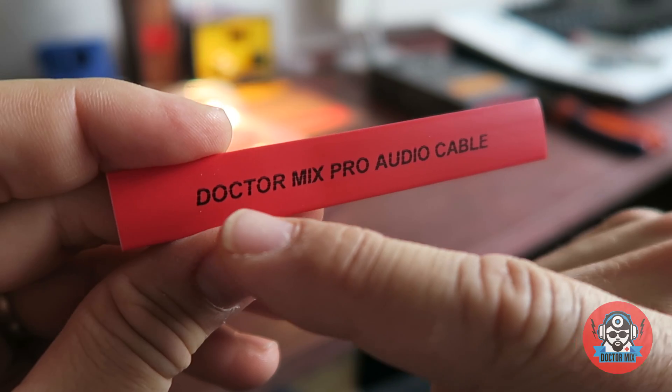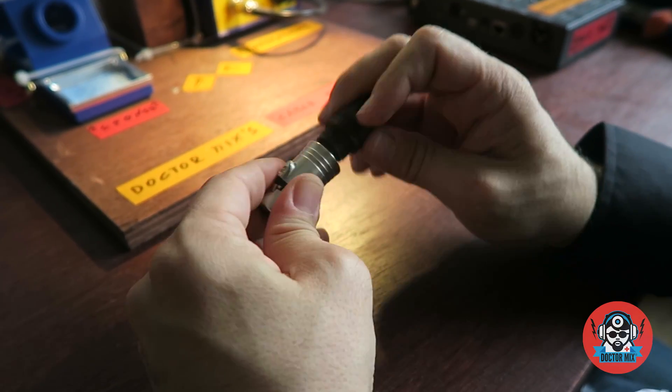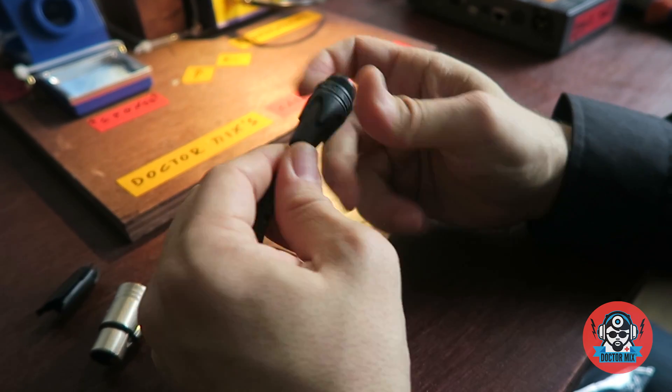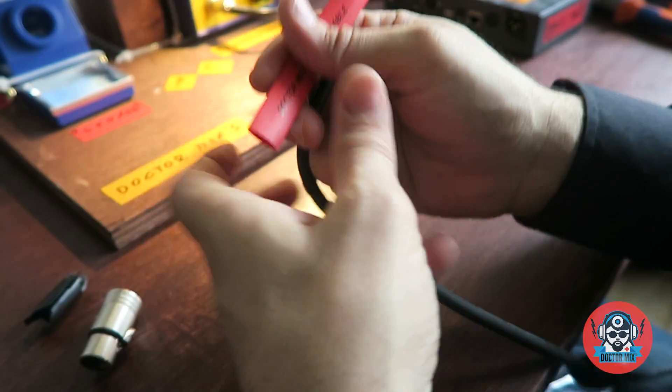So another important thing, heat shrink. We've made our own Dr. Mix Pro Audio cable. So first we put this bit on. You don't want to forget it. You need to do it first. Then you put your heat shrink.